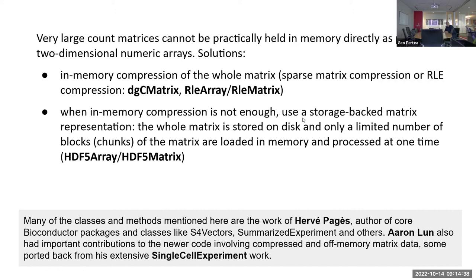There are some ways to deal with this. The first is in-memory compression: if you can process the matrix as a whole but in a compressed format directly in memory. There are the DGC matrix and RLE array — run-length encoded array — though processing on the RLE array is not as fast as on the DGC sparse arrays.